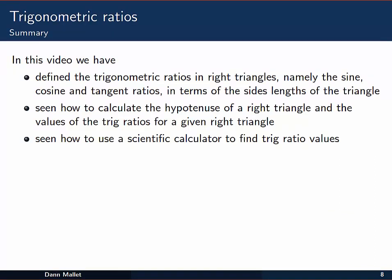So in this video, we've defined the trigonometric ratios in right triangles, specifically the sine, cosine and tangent ratios, and defined them in terms of the side lengths of the triangle. We've seen how to calculate the hypotenuse of a right triangle and the values of the trig ratios for a given right triangle. We've also seen how to use a scientific calculator to find trig ratio values.